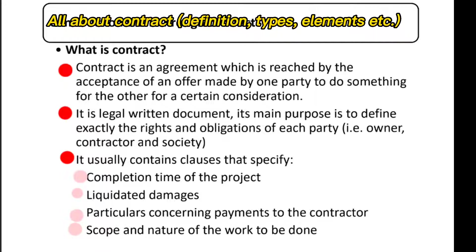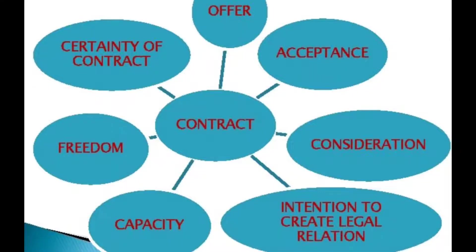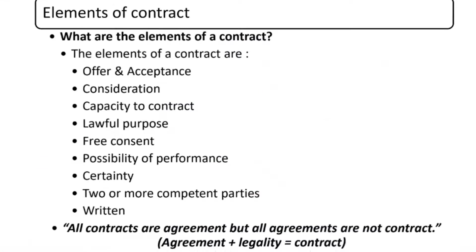Now let's talk about the elements of contract. The elements of contract are: offer and acceptance, consideration, capacity to contract, lawful purpose, free consent, possibility of performance, certainty, competent parties, and return.